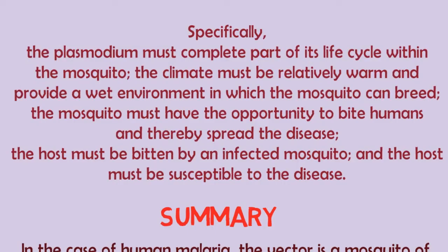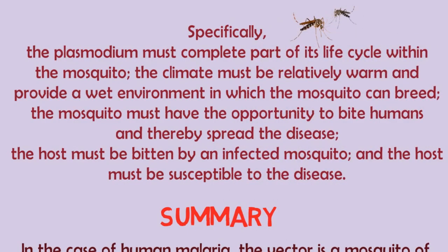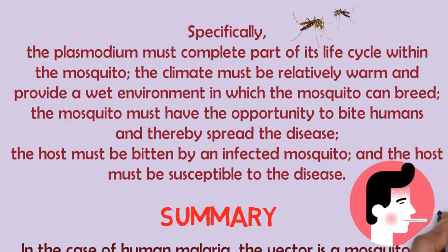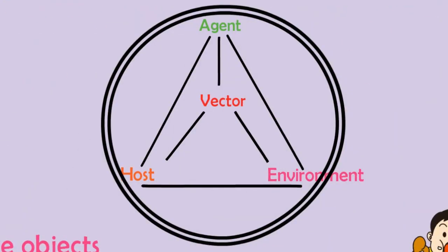Specifically, the Plasmodium must complete part of its life cycle within the mosquito. The climate must be relatively warm and provide a wet environment in which the mosquito can breed. The mosquito must have the opportunity to bite humans, usually at night, in houses where sleeping people lack screens and mosquito nets, and thereby spread the disease. The host must be bitten by an infected mosquito, and the host must be susceptible to the disease. All these factors are responsible for disease causation.